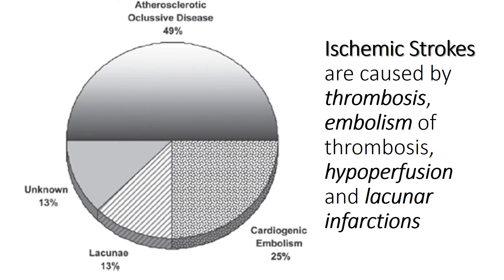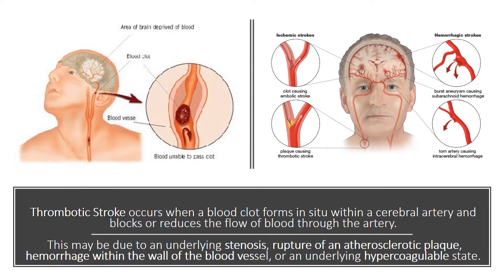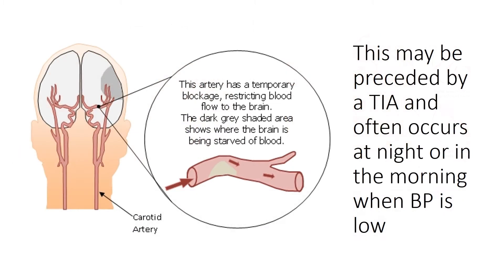Ischemic strokes are caused by thrombosis, embolism, hypoperfusion, and lacunar infarctions. A thrombotic stroke occurs when a blood clot forms in situ within a cerebral artery and blocks or reduces the flow of blood through the artery. This may be due to an underlying stenosis, rupture of an atherosclerotic plaque, hemorrhage within the wall of the blood vessel, or an underlying hypercoagulable state. This may be preceded by a transient ischemic attack and often occurs at night or in the morning when blood pressure is low.